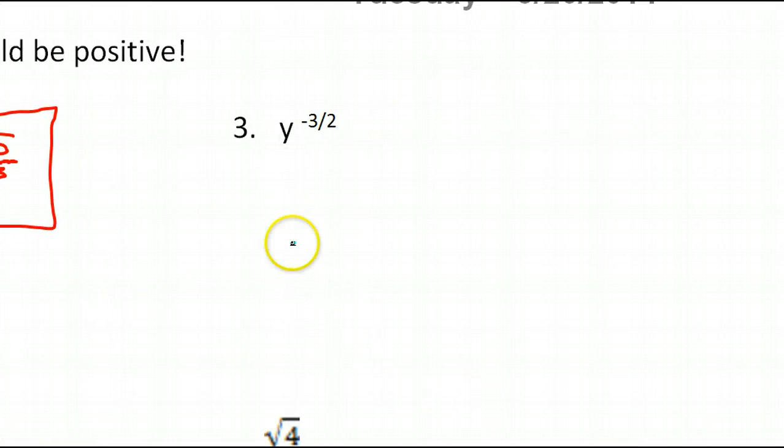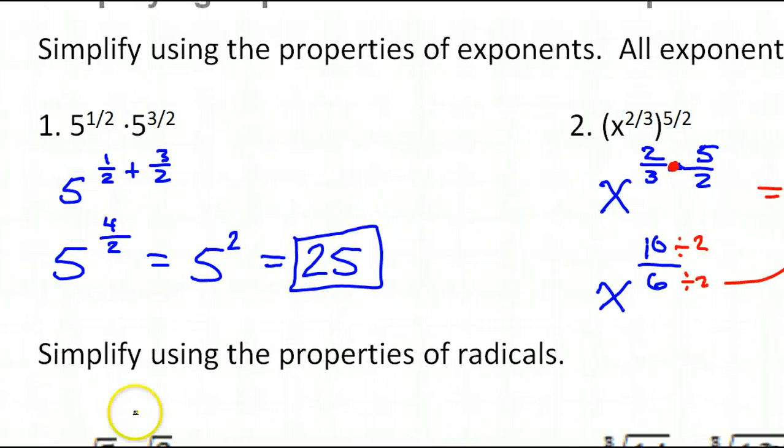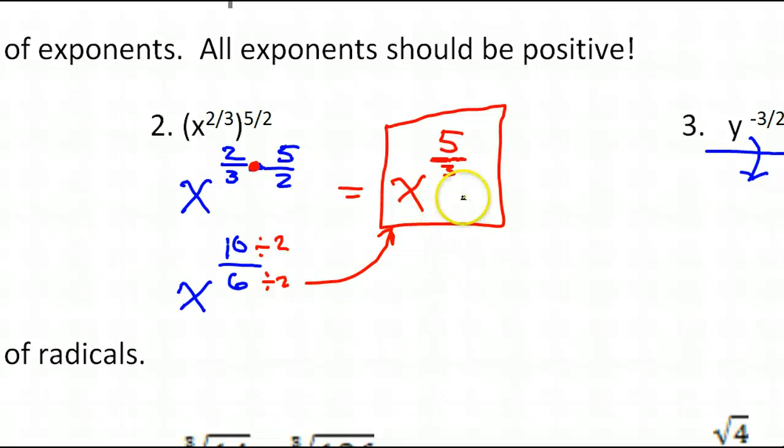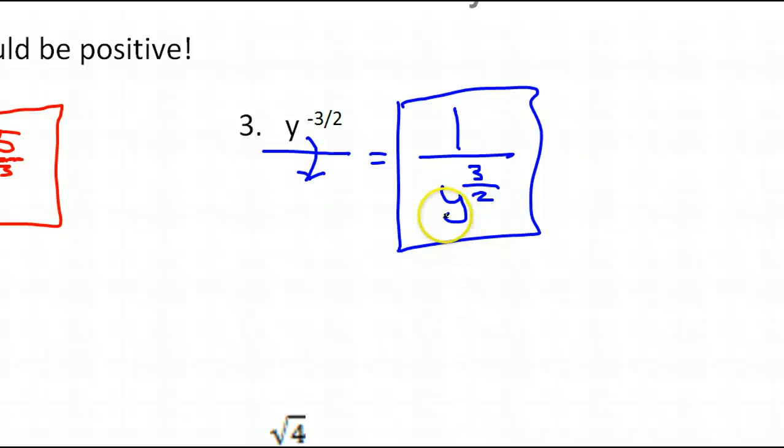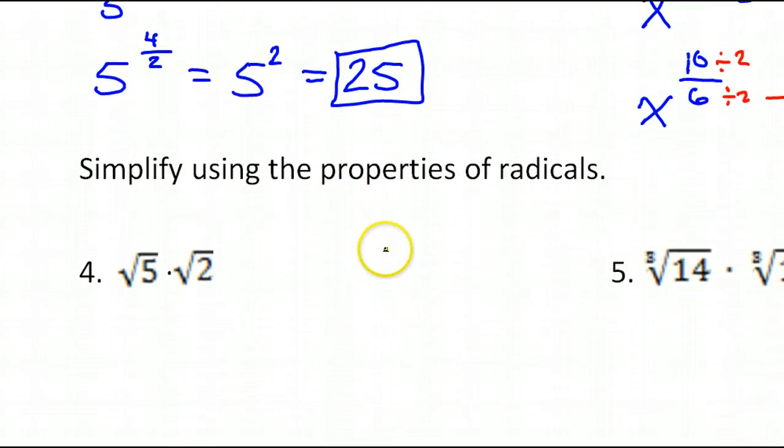Looking at number three. Well, if you have a negative power, that negative means you're going to drop that expression down to the denominator. So this is starting off in the numerator. It's got to drop down. So I'm going to have y to the three over two power. But it's in the bottom. So I need a one in the top. So that's the final answer for number three. By the way, pay attention to the directions. The directions say simplify using the property of exponents. It doesn't say anything about changing into radical form. So if it doesn't say something about changing into radical form, then don't do that.